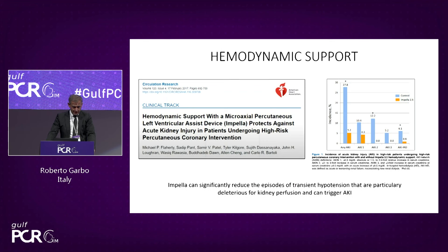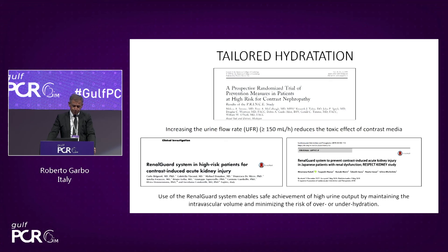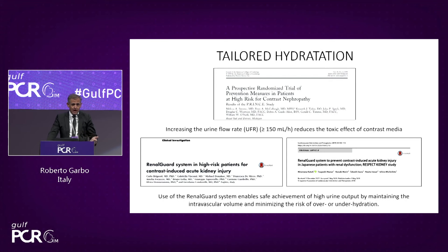Regarding hemodynamic support, one study evaluating high-risk patients on protected PCI showed that use of Impella compared to a control arm led to reduced acute kidney injury — though we need more studies on that topic. Tailored hydration with the Renal Guard system increases urine flow rate during the procedure, which is important for the kidney to avoid hypotension and reduce the concentration effect of contrast.